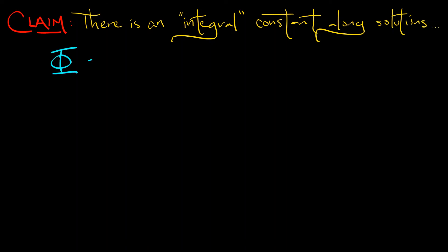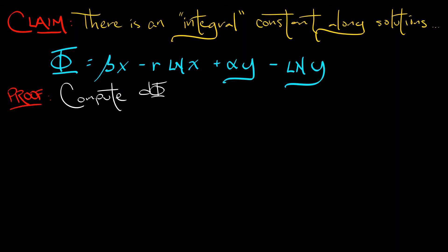I claim that this is a conservative system. There is an integral that is constant along solutions. Consider the function Φ = βx - r·log(x) + αy - log(y). How do I check this is constant along solutions? Just compute dΦ/dt. With chain rule, we get β·dx/dt - (r/x)·dx/dt + α·dy/dt - (1/y)·dy/dt.